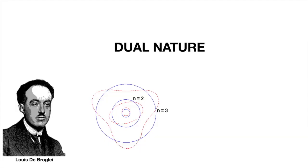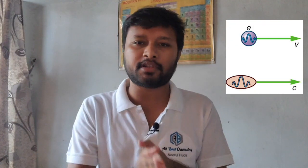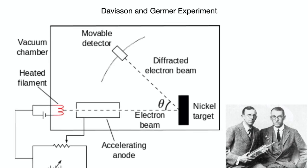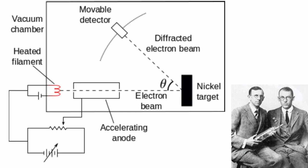Mathematically, de Broglie's theory was expressed as λ = h/p, where λ is the wavelength associated with the wave, h is Planck's constant, and p is linear momentum. This theory was later confirmed experimentally by Davisson and Germer, proving that the de Broglie theory is correct and that light indeed has both natures.